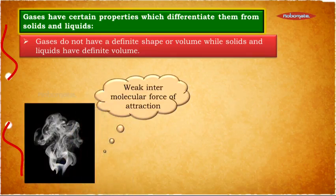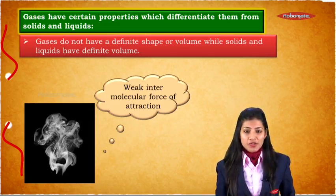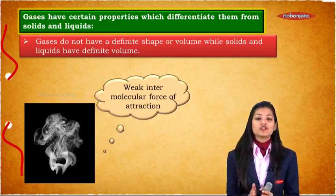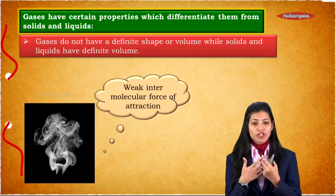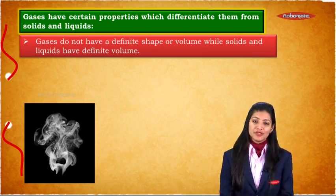Gaseous substances usually take the shape or volume of the container in which it is kept. Reason is because the gases have weak force of attraction between each other, these gaseous molecules. Hence, they do not have definite shape or volume.